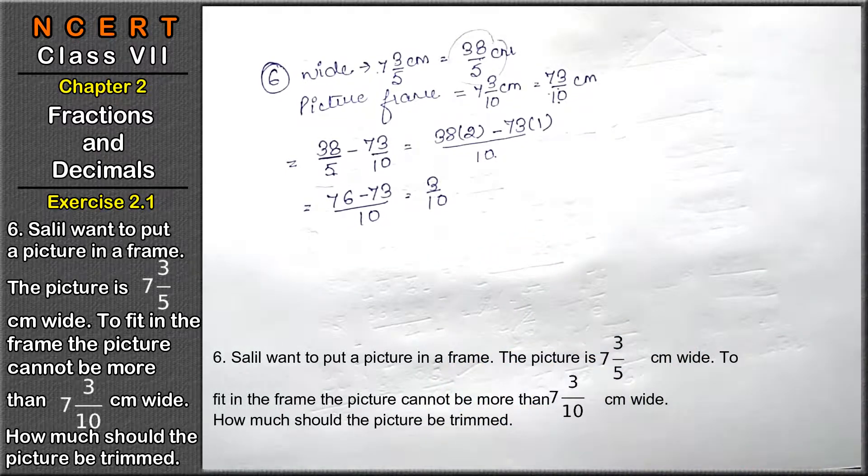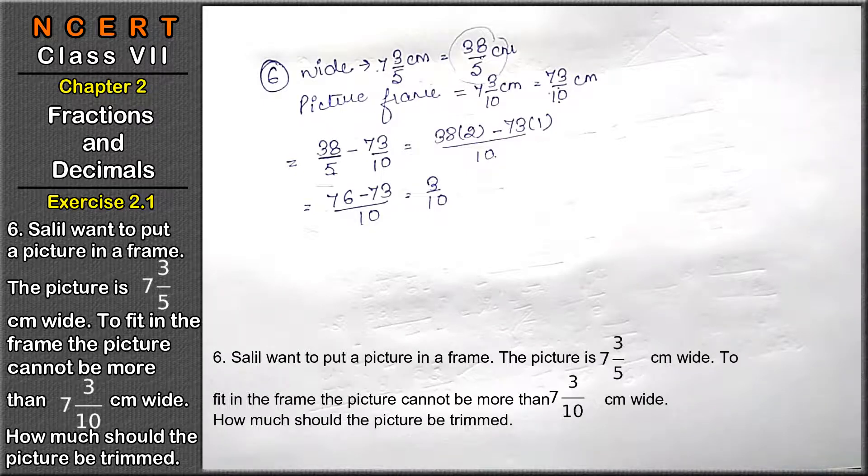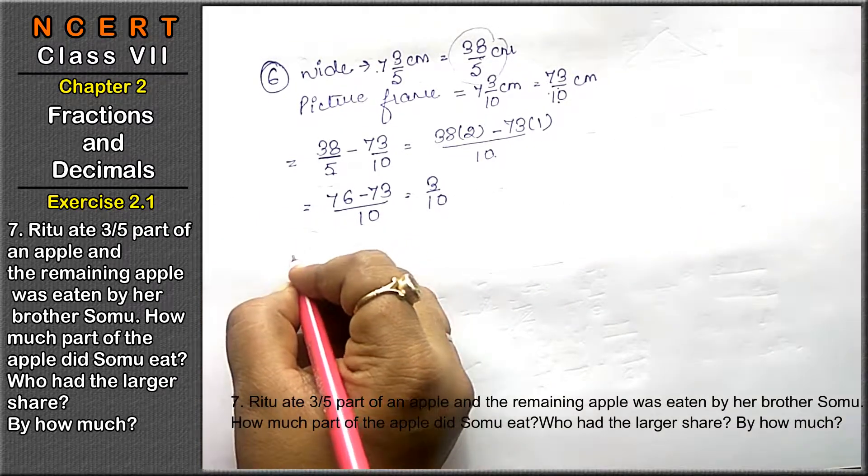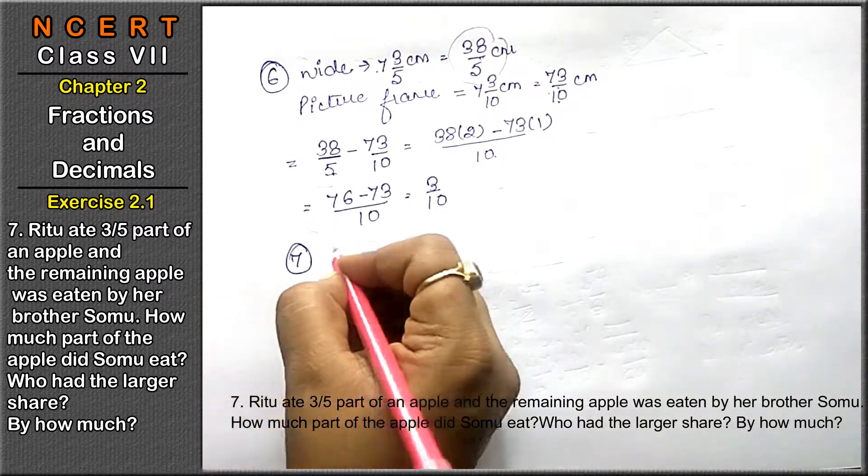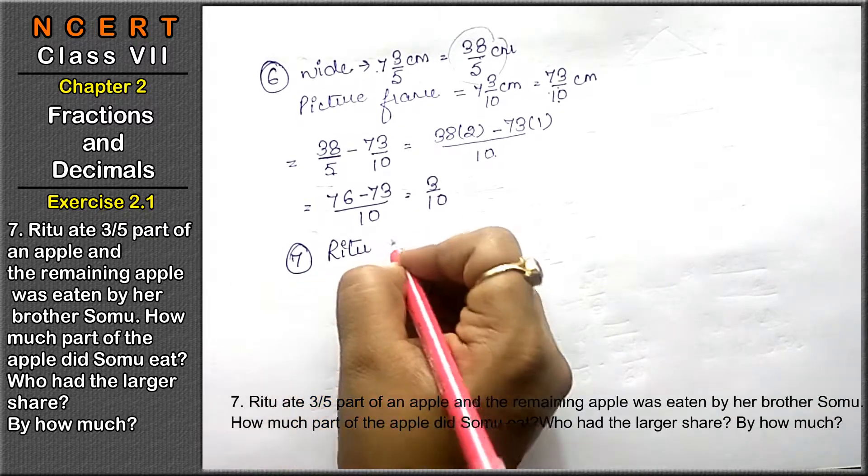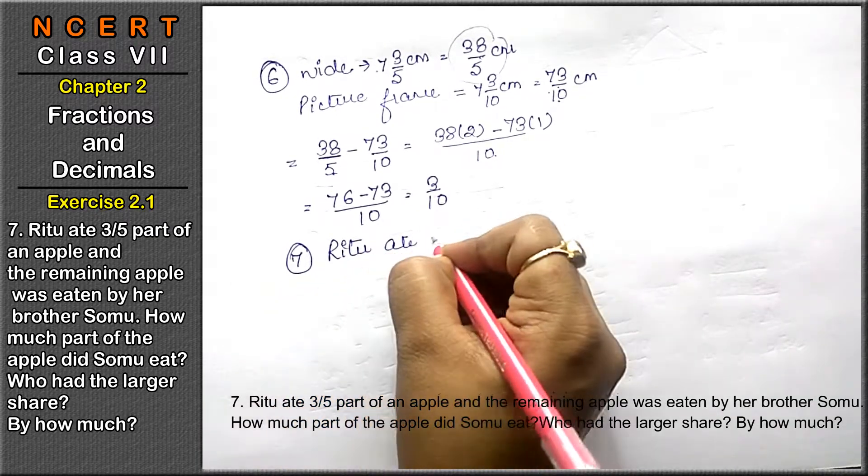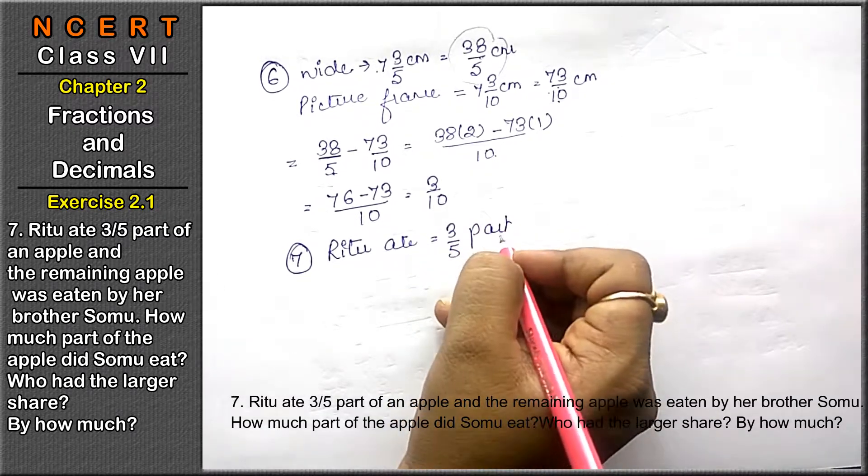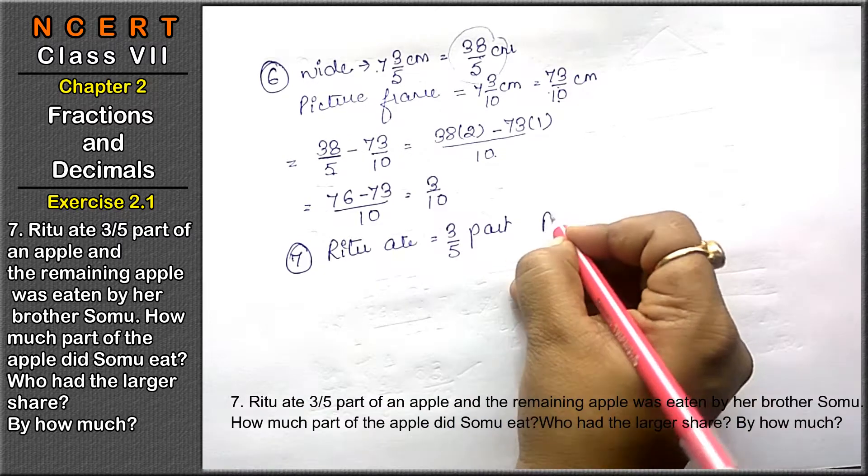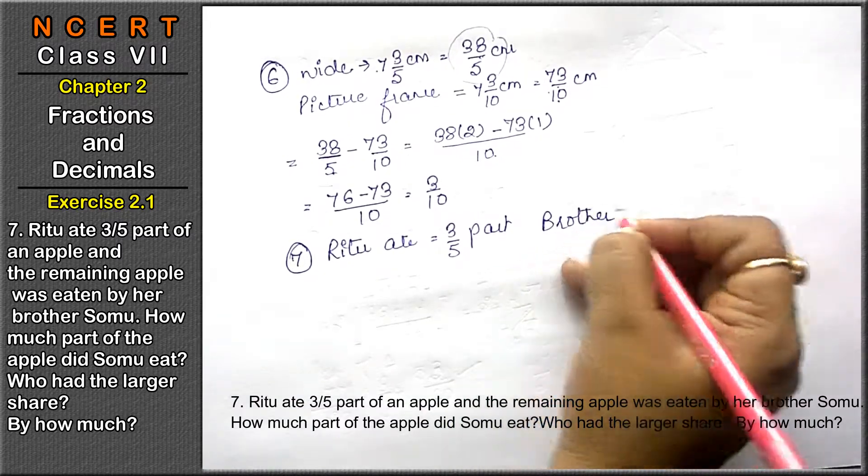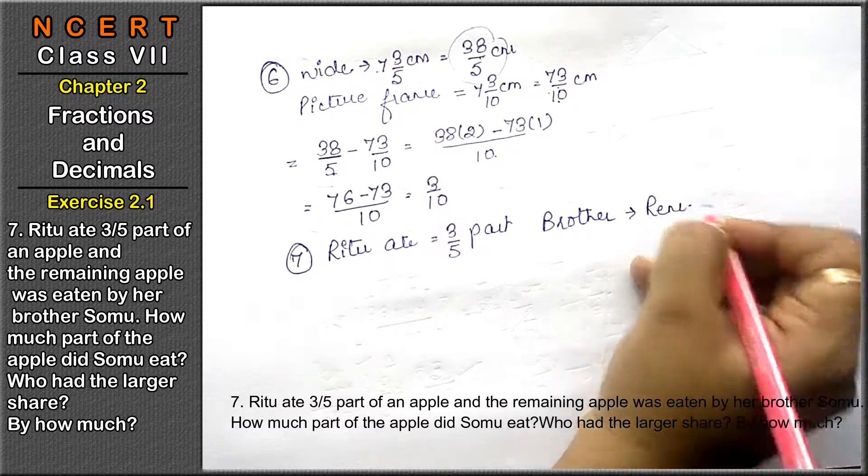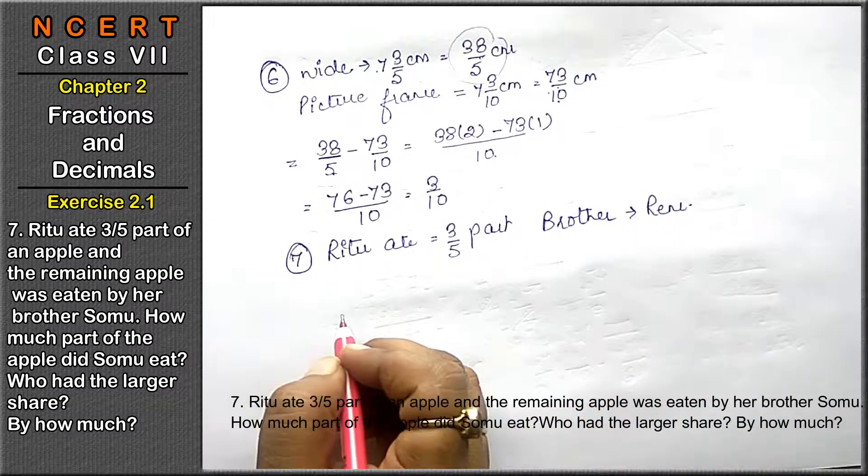Let's do the next question. Seventh question: Ritu ate 3/5 part of an apple, right friends? Now the remaining apple was eaten by her brother. How much part of the apple did Somu eat?